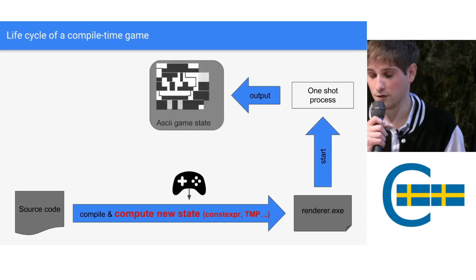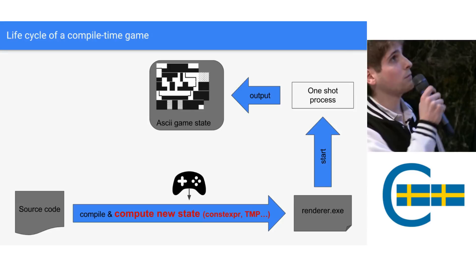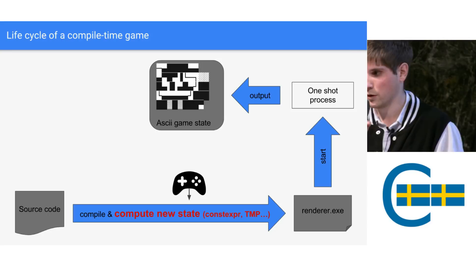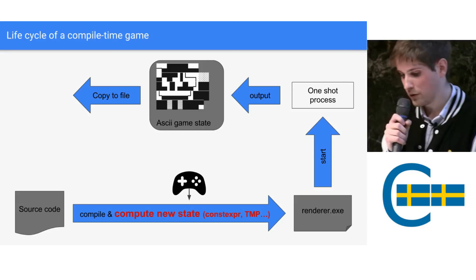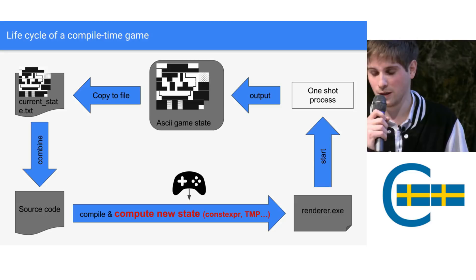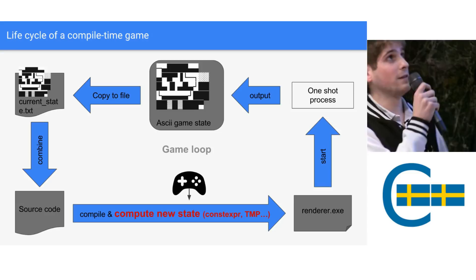This is going to give us an executable. Since most of the logic has already been computed within the compilation phase, this executable is going to be very simple. It has only one responsibility, which is to output the state of the game in an ASCII format. So it's a one-shot process — there is no loop inside this executable, just output the game state. We just copy the game state, put it into a file called 'current state', and combine it again with the source code. By combining both, we have enough information to compute the next state of the game. And this is the game loop.